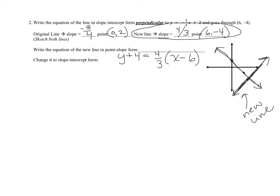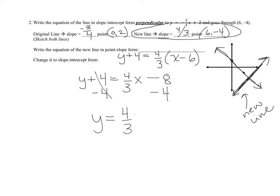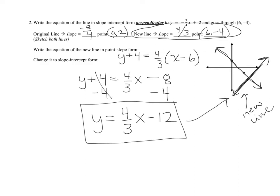Converting to slope-intercept form: distribute 4/3 to get y plus 4 equals 4/3 x minus 8, since 4/3 times 6 equals 8. Subtract 4 from both sides to get y equals 4/3 x minus 12. The y-intercept of negative 12 makes sense based on our sketch. You can verify by plugging in (6, negative 4) for x and y.